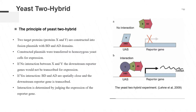Based on this principle, a yeast-2 hybrid system can be designed. Two proteins to be studied, protein X and protein Y, are constructed into fusion plasmids with BD and AD domains. The constructed plasmids are transferred to homozygous yeast cells for expression. If there is no interaction between the two proteins, the downstream reporter genes would not be transcribed for expression. If there is an interaction between the two proteins, BD and AD are spatially close and the downstream reporter genes are transcribed. By judging whether the reporter gene is expressed or not, the interaction between the two proteins can be determined.